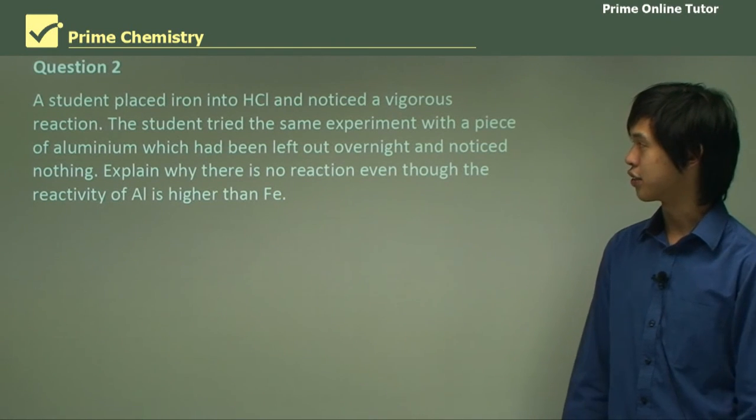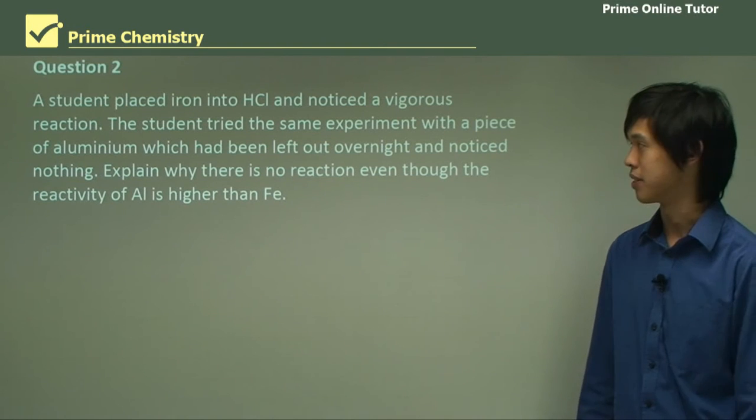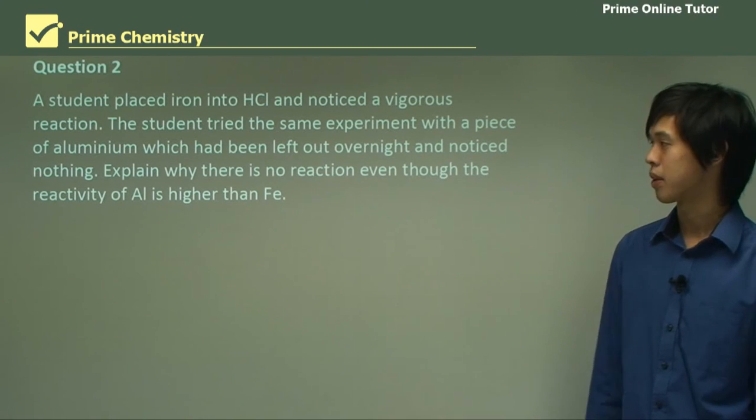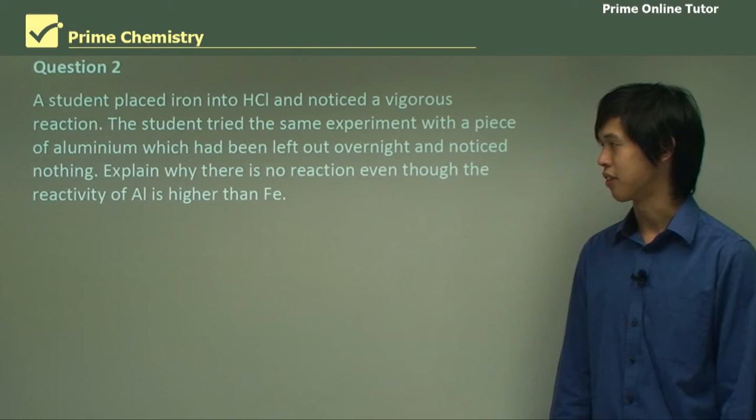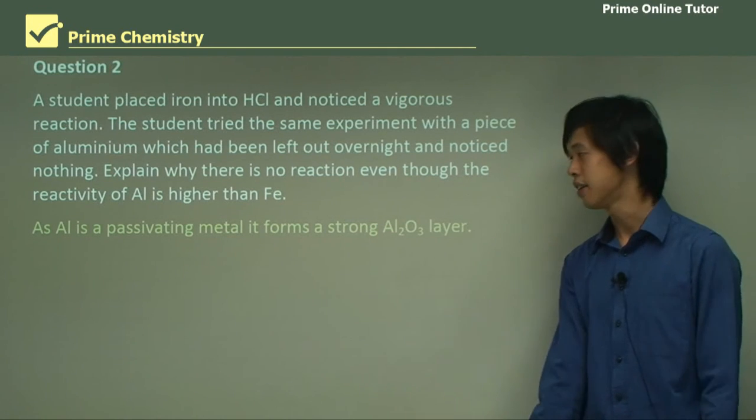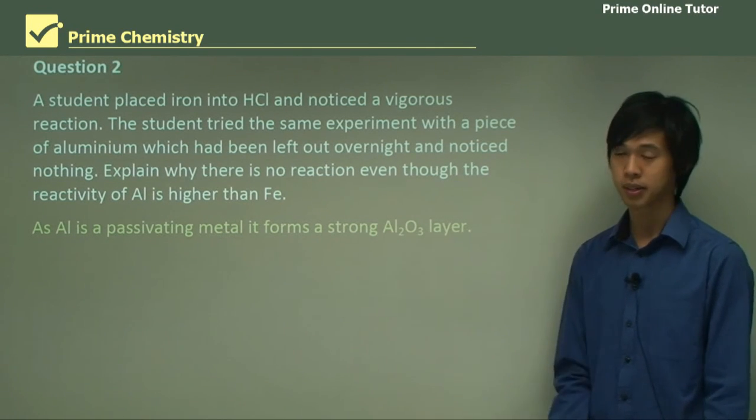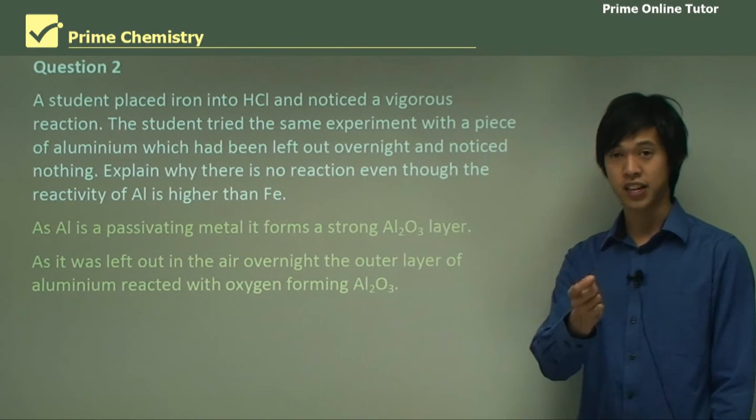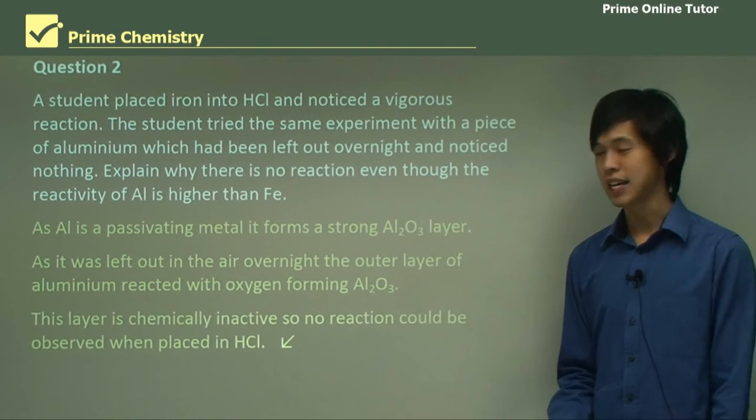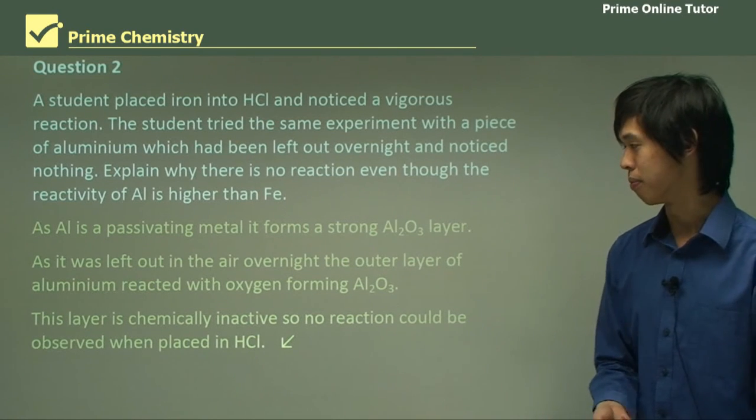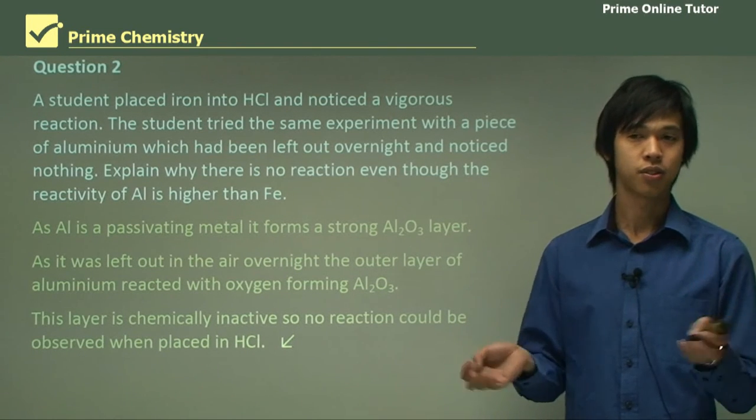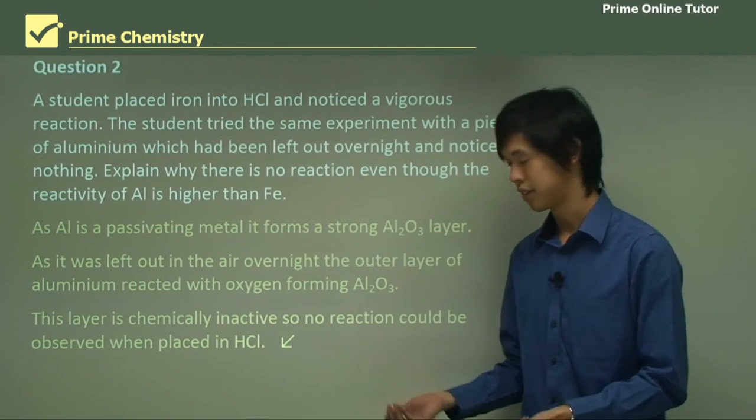A student placed iron into HCl and noticed a vigorous reaction. The student tried the same experiment with a piece of aluminium which had been left out overnight and noticed nothing. Explain why there is no reaction, even though the reactivity of aluminium is much higher than iron. Aluminium is a passivating metal and forms a very strong layer of aluminium oxide. When it was left out overnight, it reacted with the oxygen in the air to form this aluminium oxide layer. That layer is chemically inactive and protected the inner aluminium from the attack of the HCl. So you didn't notice any reaction because the HCl just couldn't get at any of the aluminium atoms. That's why—passivation.